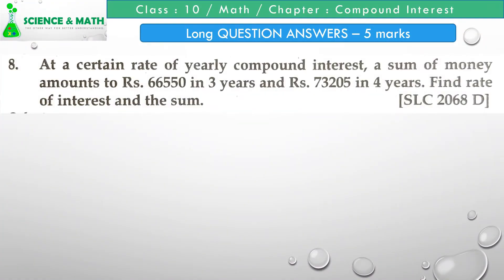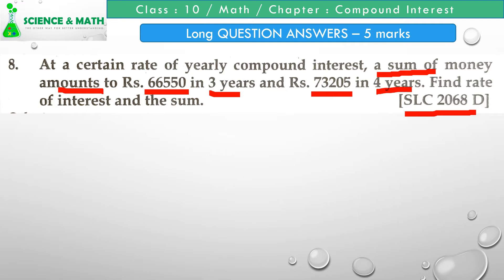Question number eight: At a certain rate of yearly compound interest, a sum of money amounts to rupees 66,550 in three years and rupees 73,205 in four years. Find the rate of interest and the sum. This question was asked in SLC 2068. In this question, a sum amounts to rupees 66,550 in three years and 73,205 in four years. We need to find the rate of interest and the sum.